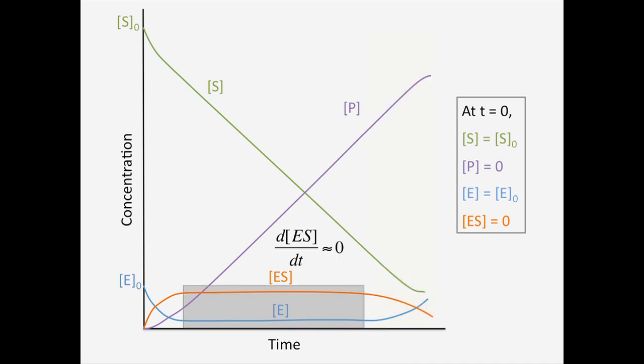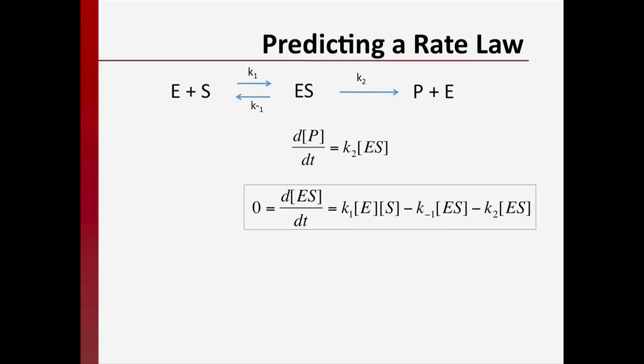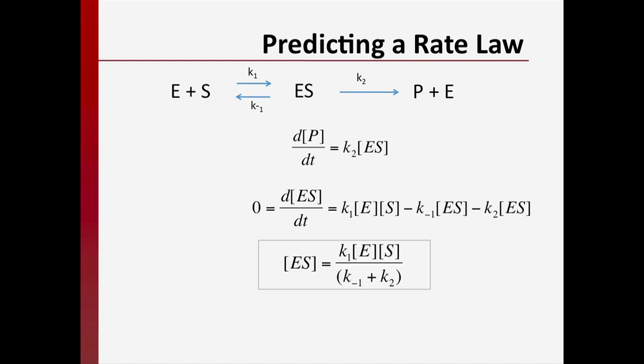In the regime where the substrate concentration is greater than E-naught, we can make a steady-state approximation and set d[ES]/dt equal to zero. This approximation will allow us to obtain an analytic expression for the concentration of enzyme bound to substrate. Setting d[ES]/dt equal to zero allows us to solve for the concentration of the enzyme-substrate complex, which is equal to k1 times the concentration of free enzyme times the concentration of substrate, divided by the sum of k-1 and k2. Now let's lump the rate constants into a new term we'll call Km, and substitute this into our expression for the concentration of the enzyme-substrate complex.